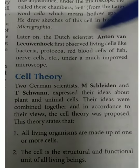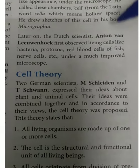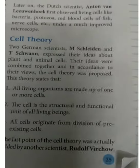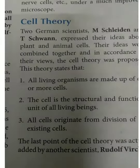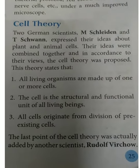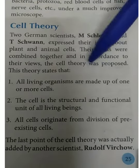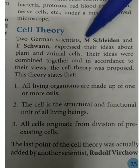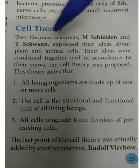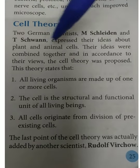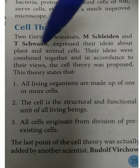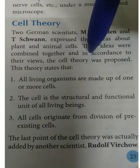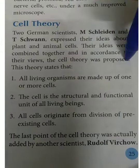You have to remember the names of both scientists. Scientists M. Schleiden and T. Schwann expressed their ideas about plant and animal cells. We have to remember the names of the scientists who gave the cell theory. Their ideas were combined together and the cell theory was proposed.